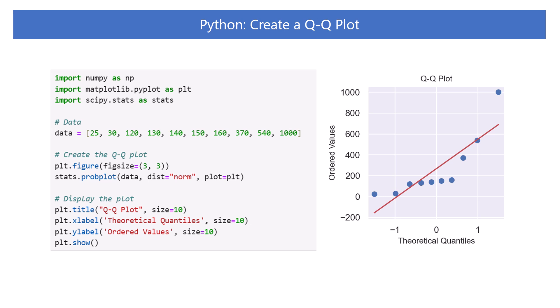Let's look at the code to create a Q-Q plot. Import NumPy and Matplotlib. In addition, we import scipy.stats to create a Q-Q plot. The data is the one we used in the previous section. It is already sorted in ascending order. But when it is not sorted, you need to do it.